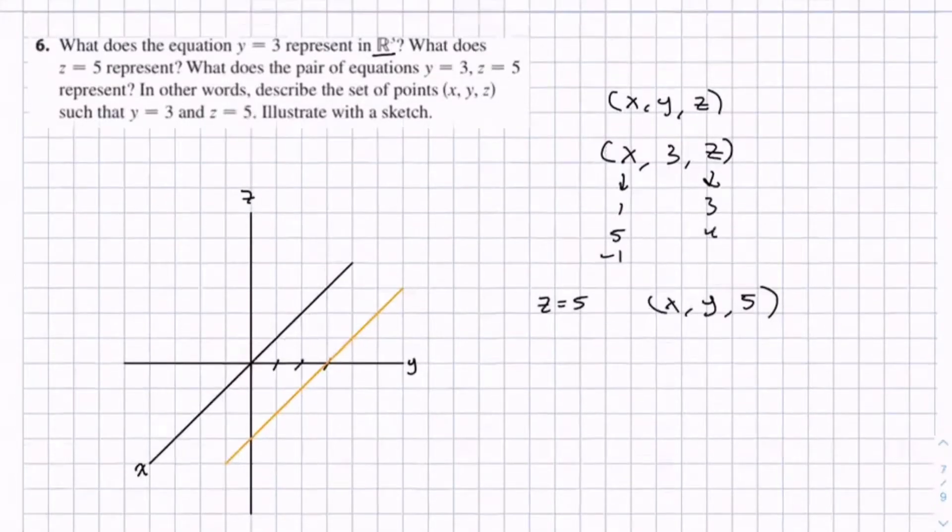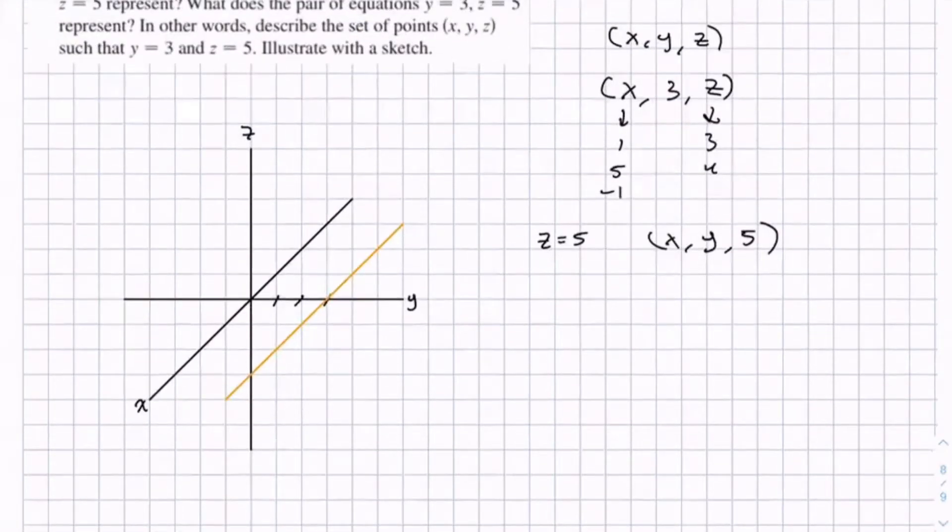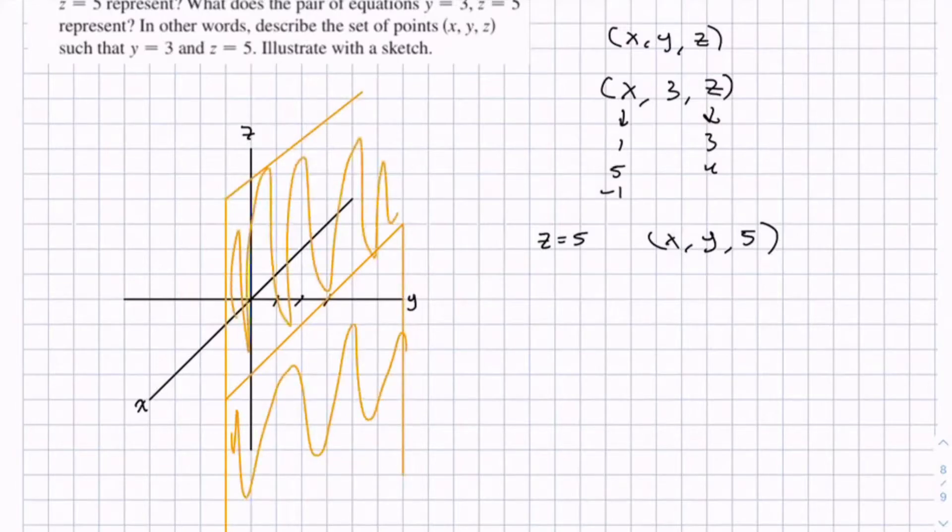But since z is not bounded, it can go up and down forever, so this creates a plane. So let's just draw this real quick. If you can just visualize that as the plane going off in all directions. So this is y equals 3.